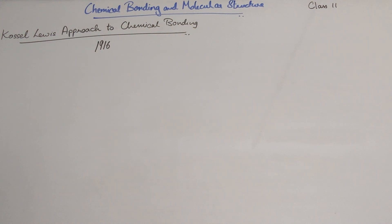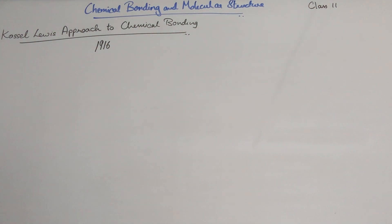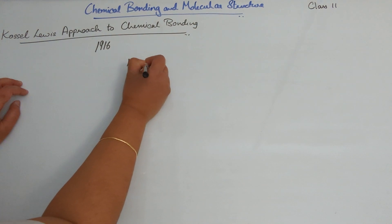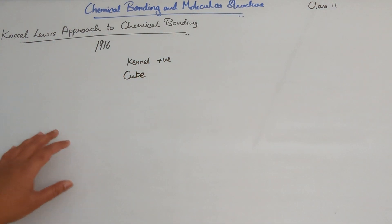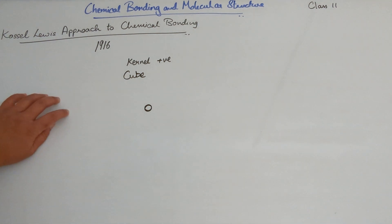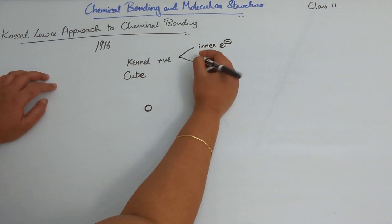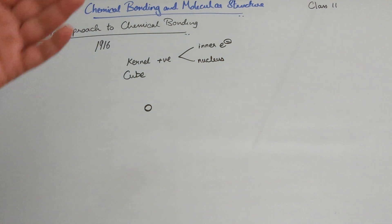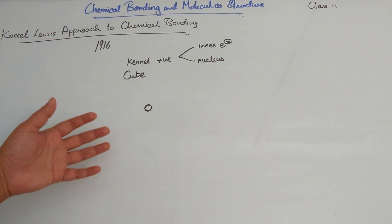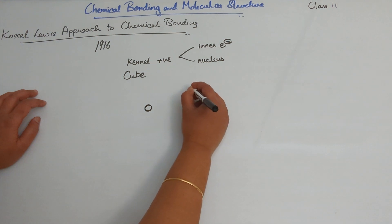According to Lewis, the atom consists of two parts. The first is the kernel, which is positively charged, and the second is the cube. The kernel is at the center and consists of the inner electrons and the nucleus. Since it doesn't include the outer electrons, the kernel carries a positive charge. The cube is the outside — the outermost shell.